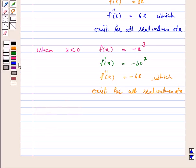Hence, we have shown that if f(x) is equal to mod x cube, f double dash exists for all real values of x and f double dash x is equal to 6x if x is greater than or equal to 0 and it is minus 6x if x is less than 0.